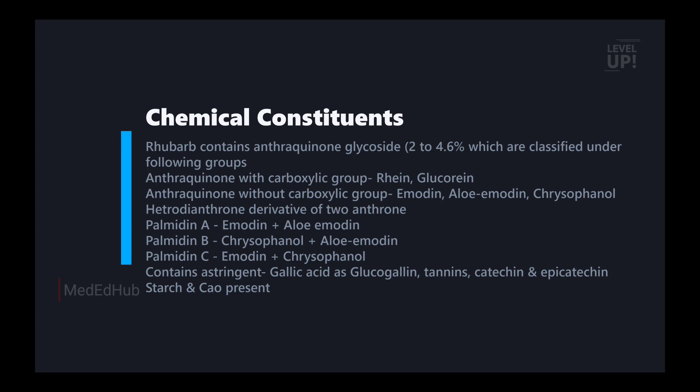Heterodianthrone derivatives of 2 anthrones: palmidin A, palmidin B and palmidin C. Palmidin A is emodin plus aloe-emodin. Palmidin B is chrysophanol plus aloe-emodin. Palmidin C is emodin plus chrysophanol. It also contains astringents, gallic acid, glucogallin, cinnamic acid, catechin and epicatechin, starch and calcium oxalate.